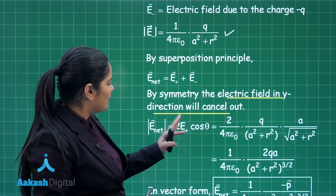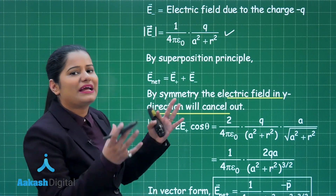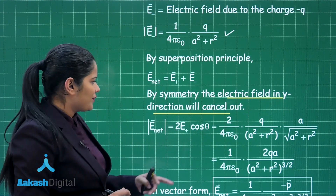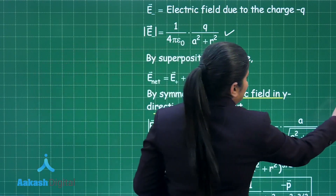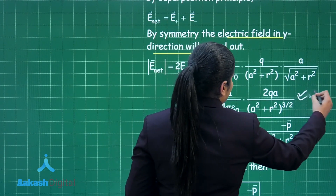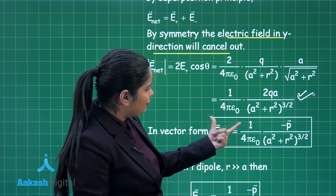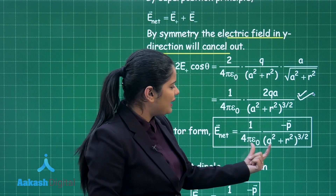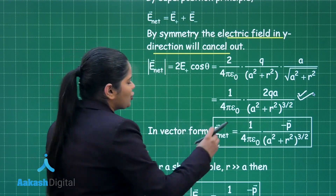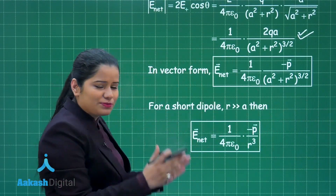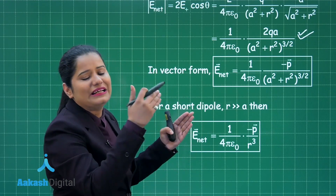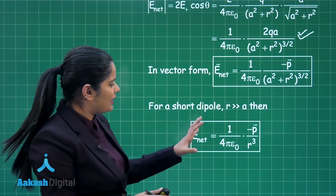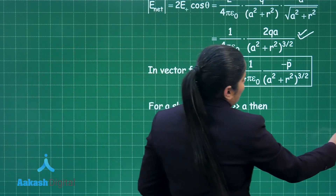The net field is 2E·cosθ — you can write E₊ or E₋ since the magnitude of the electric field at point P due to both charges is the same. Substituting the value of cosθ gives the final expression, which can be written in vector form as: −P · [1/(4πε₀)] divided by (A² + R²)^(3/2). For a very short electric dipole, A is much smaller than R, so A can be neglected, and the net electric field at point P in vector form simplifies accordingly.